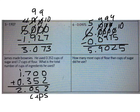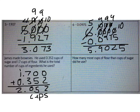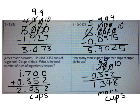How many more cups of flour than cups of sugar did he use? What operation do I need to solve this problem? This is a subtraction problem because I'm comparing amounts. Go ahead and solve that problem now. The correct answer is 1 and 348 thousandths more cups.